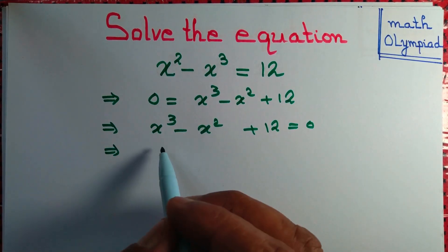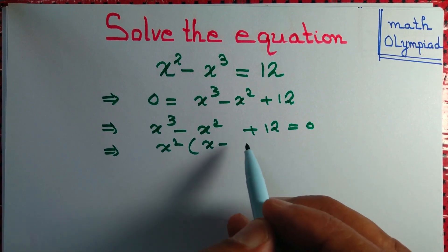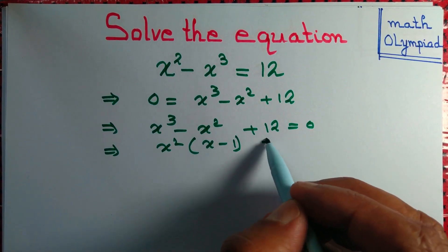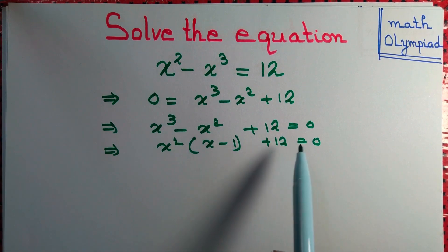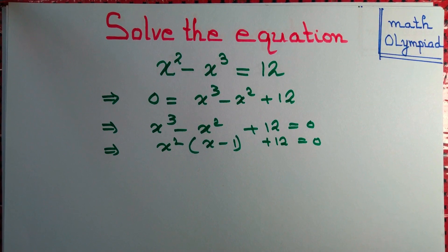We can simply write it as x square into x minus 1 plus 12 equals 0. Observe that x equals 1 is not a solution of this equation. x equals 2 is also not a solution.